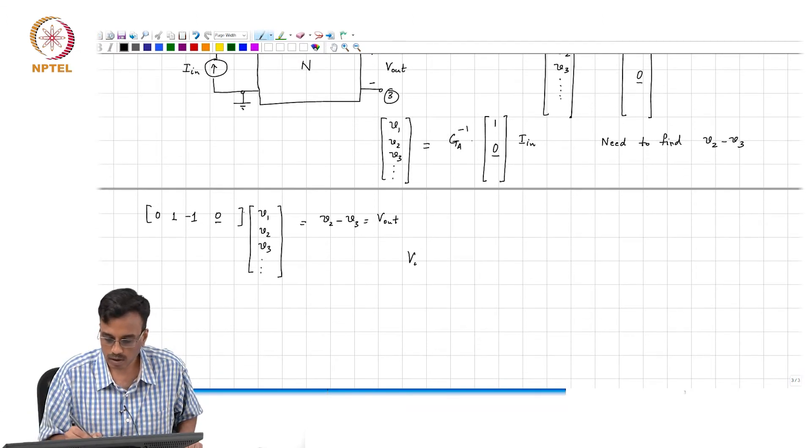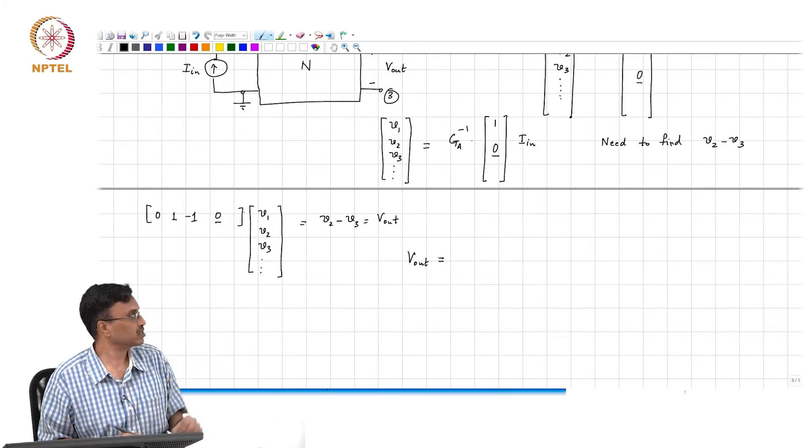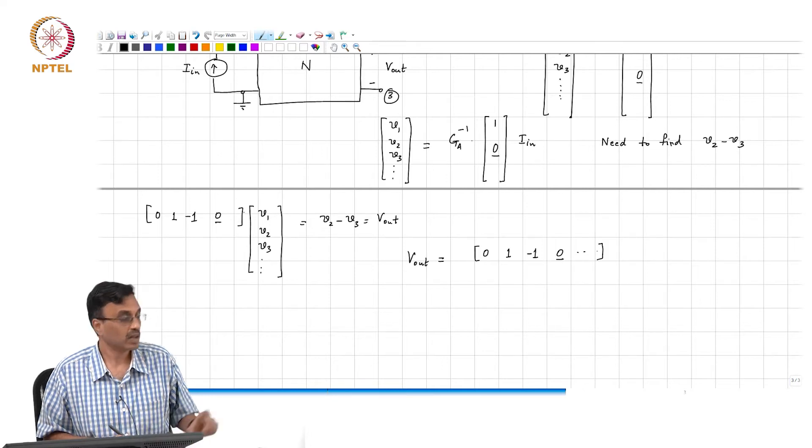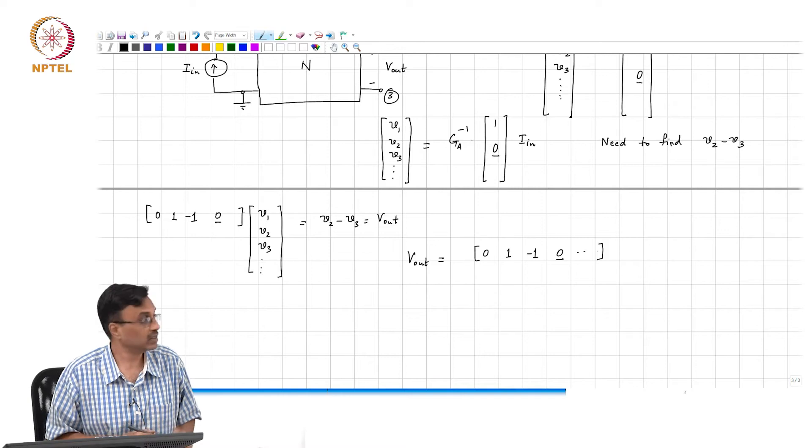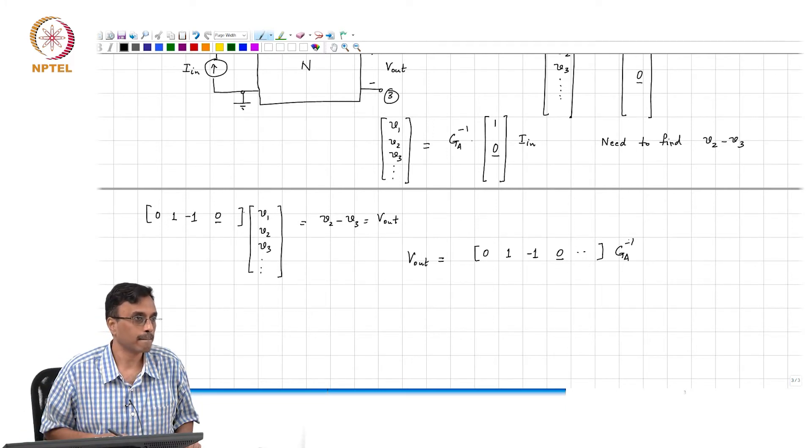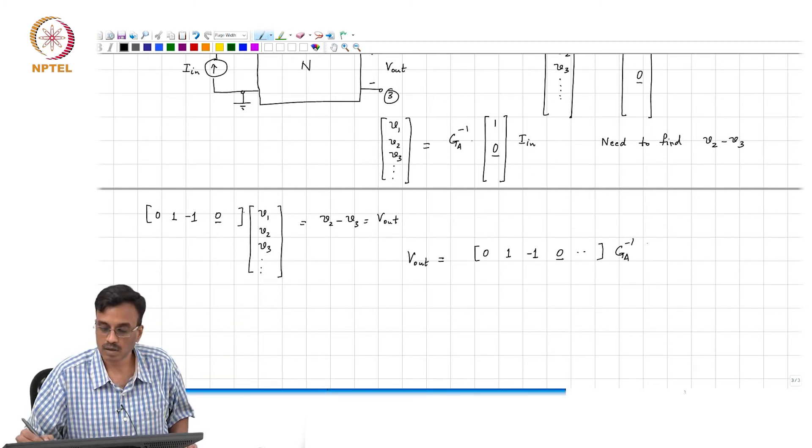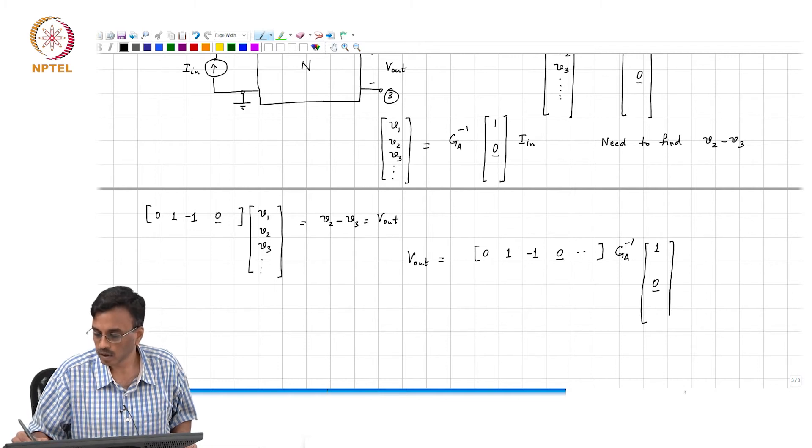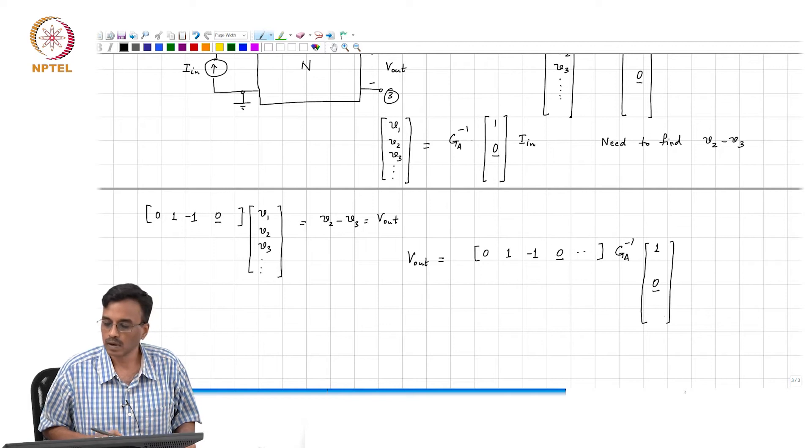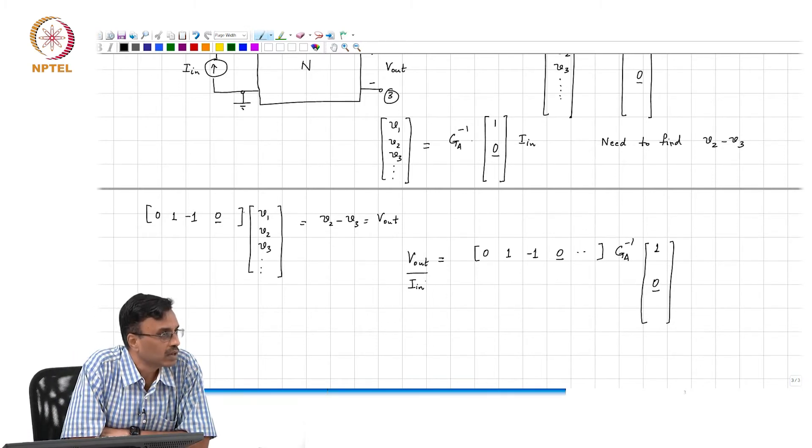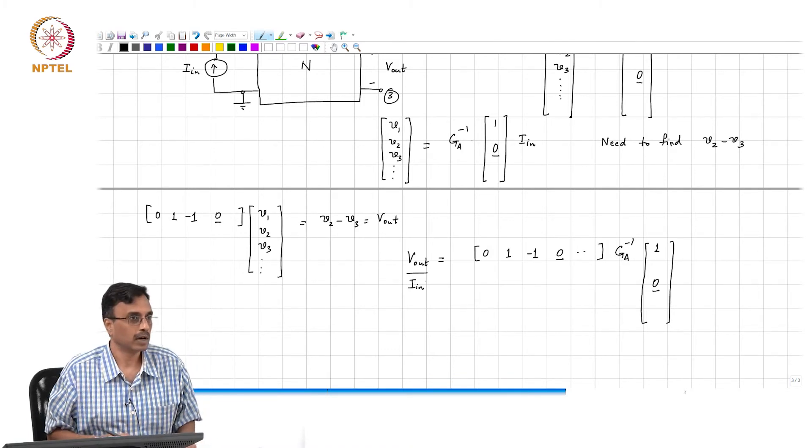What is V_out? Putting these two equations together, it is simply nothing but 0, 1, minus 1, 0, and so on, times V1, V2, V3, etc. And what is that V1, V2, V3? G_A inverse times 1 followed by all 0s, times I_in. So if I bring I_in out here, the transfer function from I_in to V_out is basically of this form.